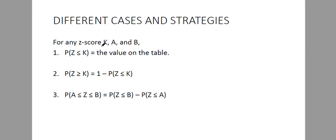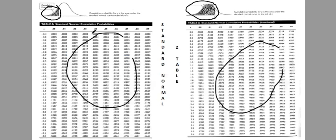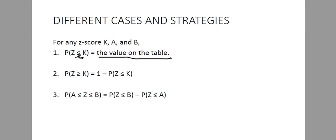For any Z-scores K, A, and B, the first case is for the probability of Z less than or equal to K. Our strategy here is to go to our table directly because the value is already on our table — the areas are directly to the left or from the left side of the normal curve. So the direction for this case is to the left. This is the easiest among the three. If you see this notation or direction to the left, go directly to the table and find the value.